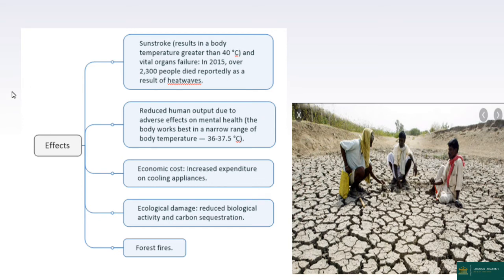In 2015, more than 2,300 people died as a result of heat waves. Heat waves reduce human output due to adverse effects on mental health. In industry, productivity and efficiency are reduced, leading to economic consequences. There is also increased expenditure on cooling appliances like coolers, fans, and air conditioners. Environmentally, there is ecological damage, reduced biological activity, and reduced carbon sequestration and carbon capture potential.